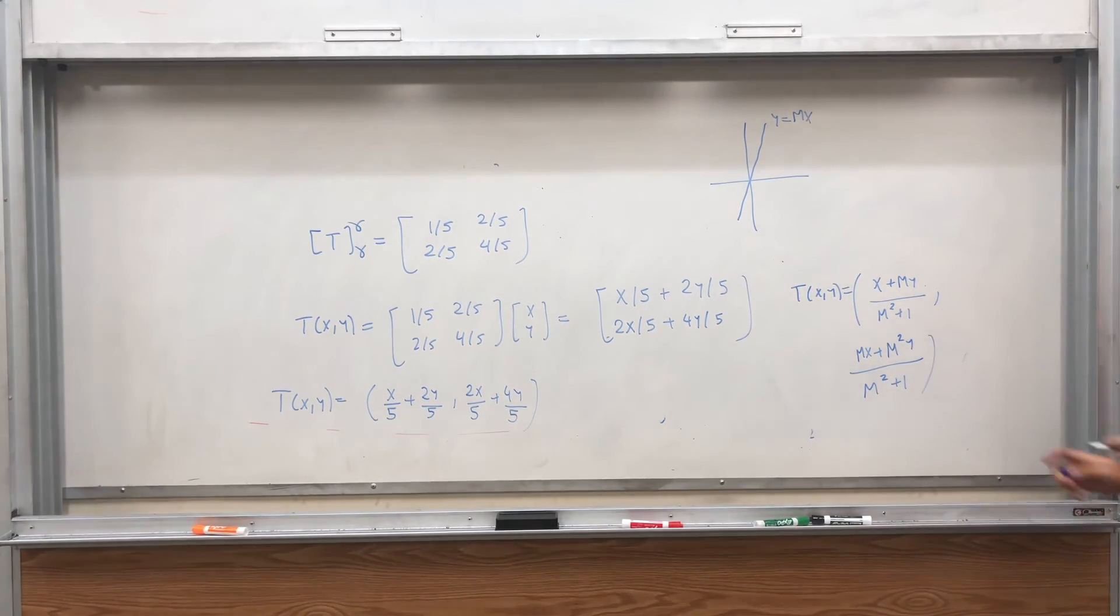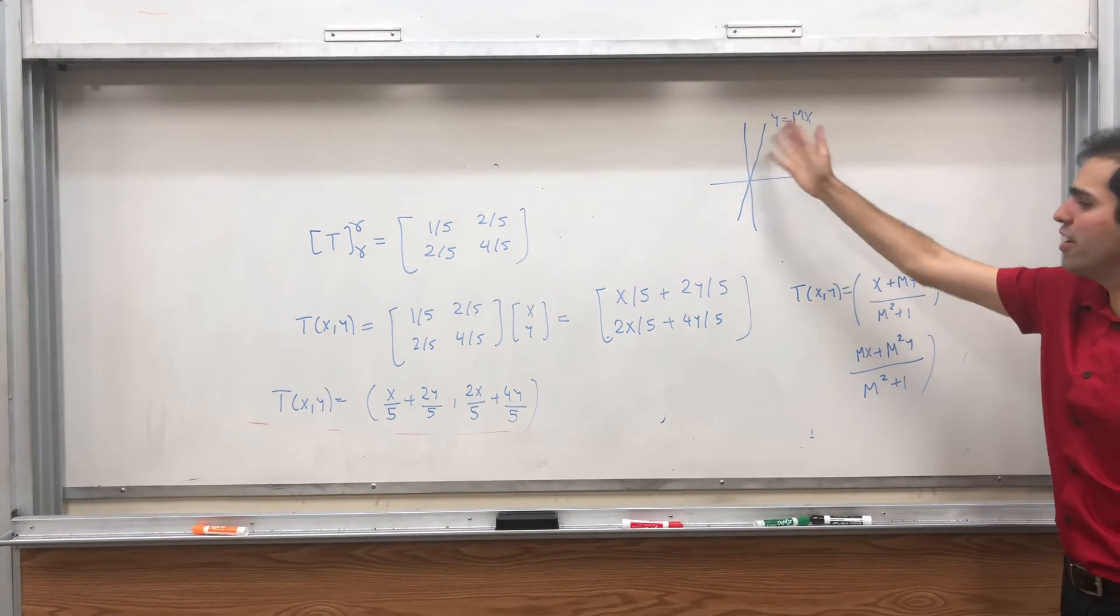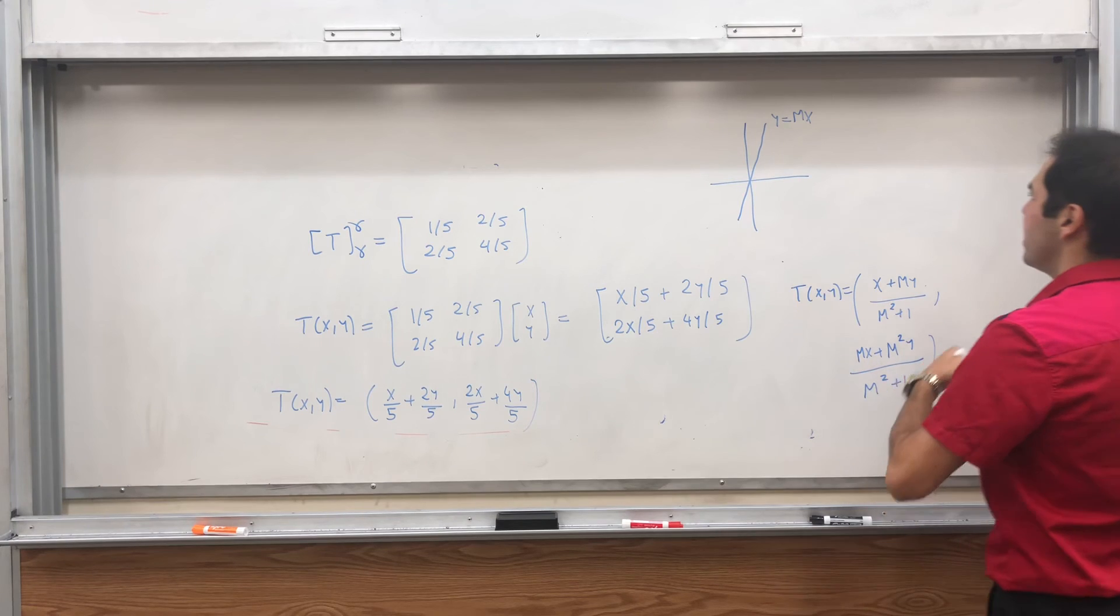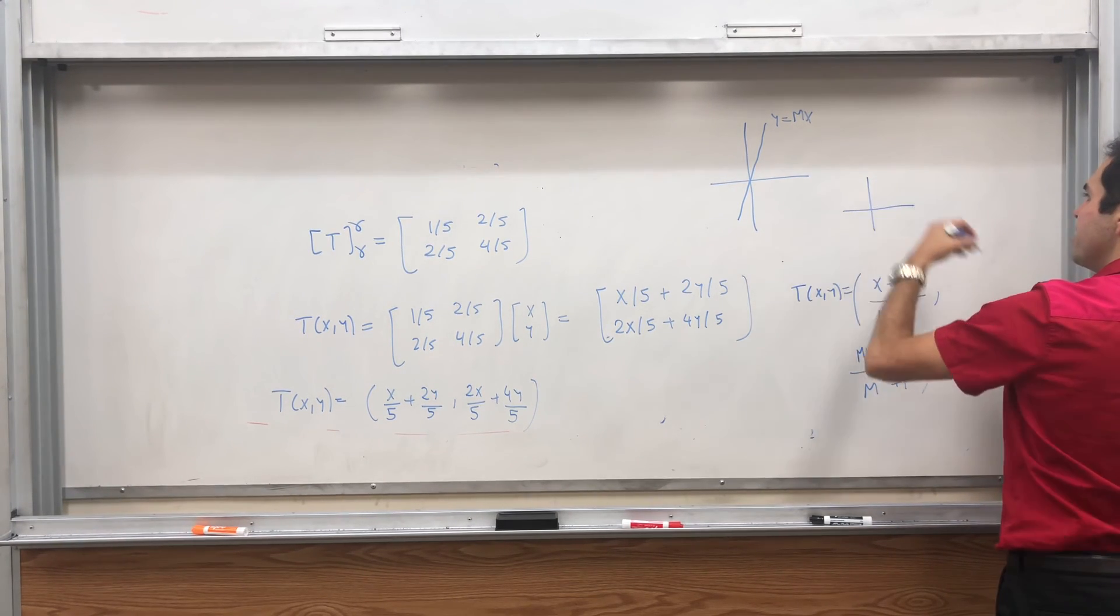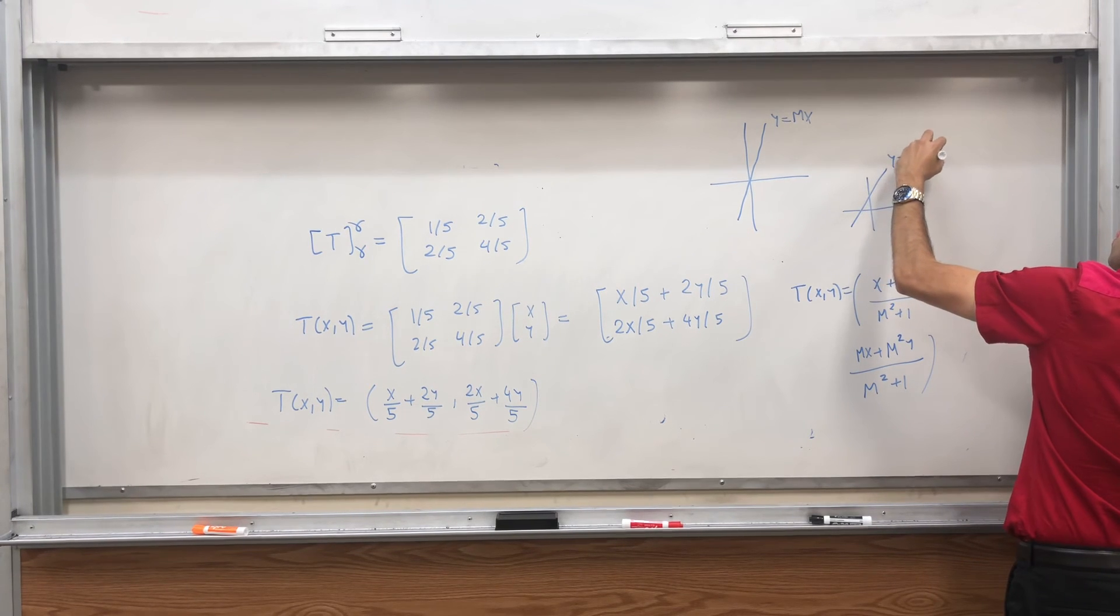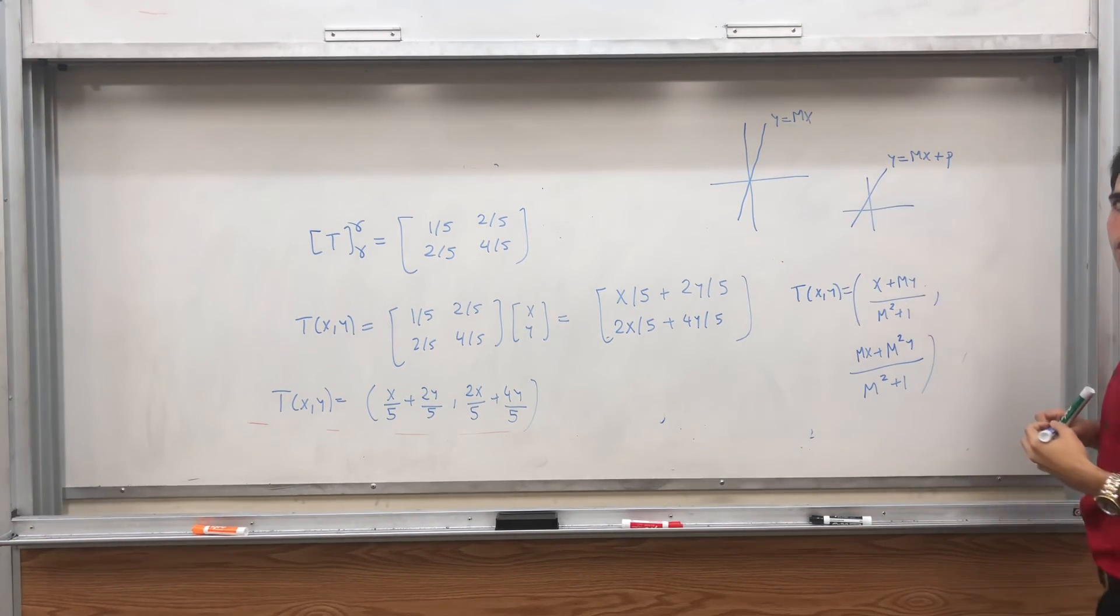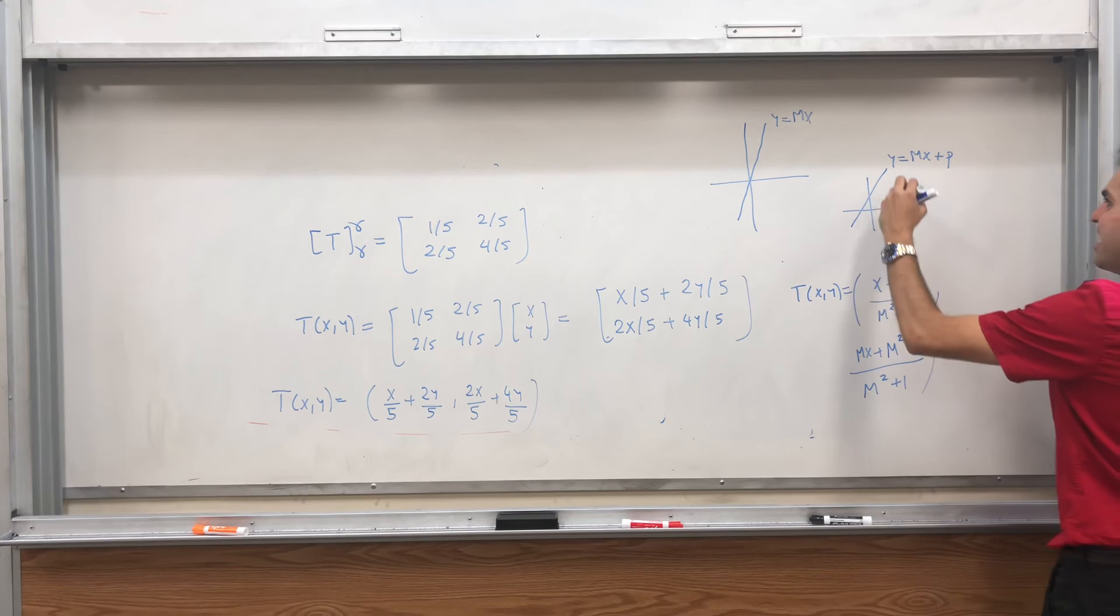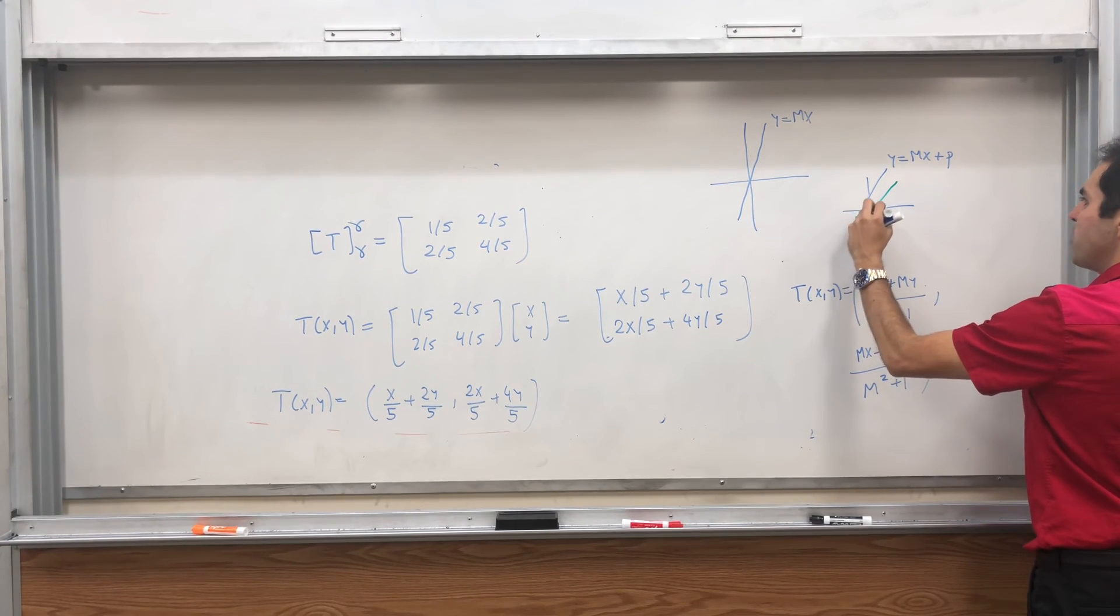I might be wrong, I haven't really checked this, but I think that's correct. And in general, if you have some other line, y equals mx plus p, something like that, then you just use a standard trick of just translating it.